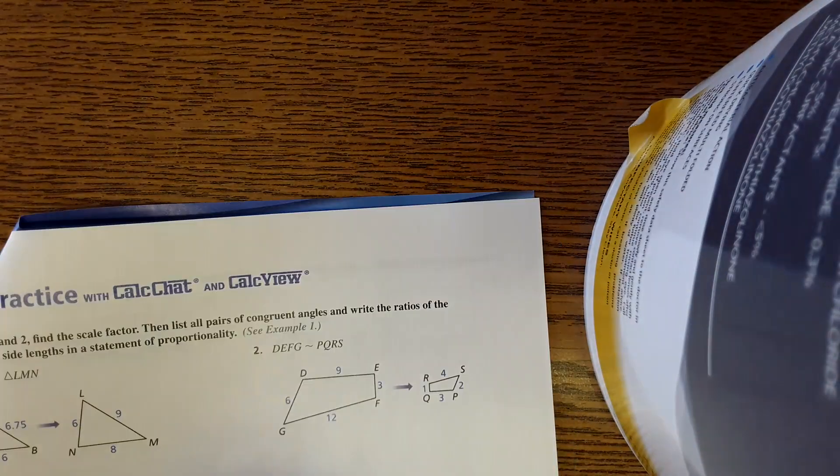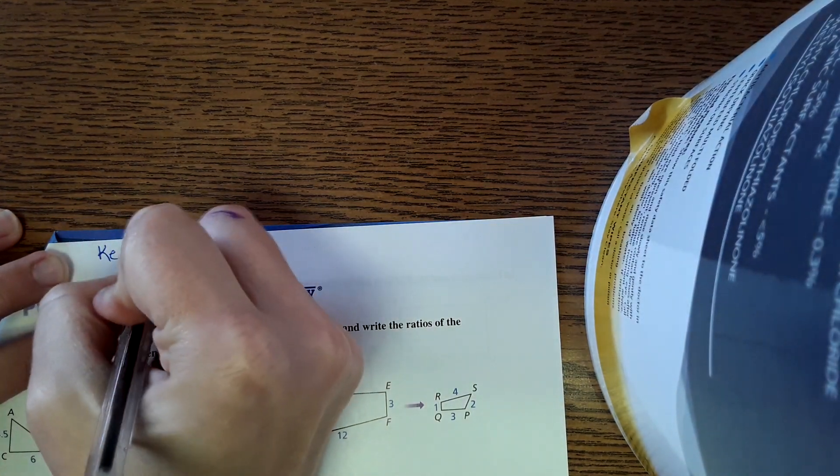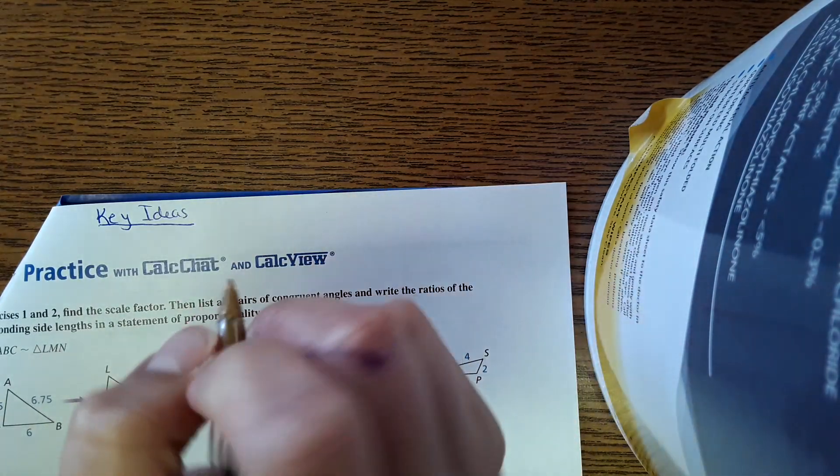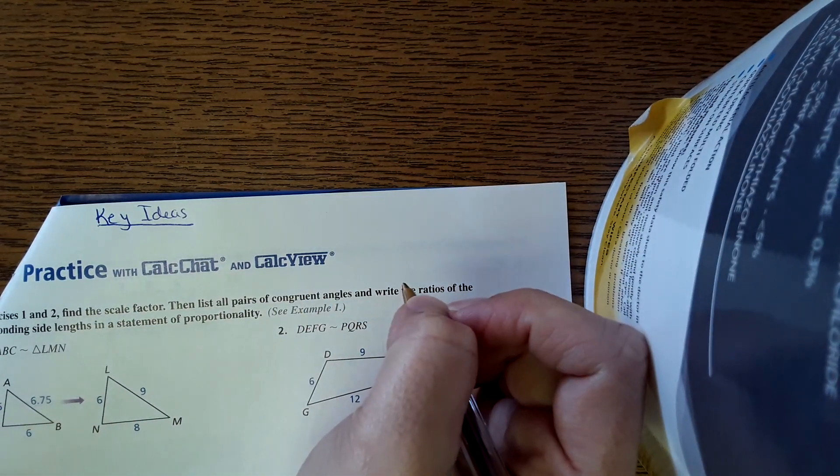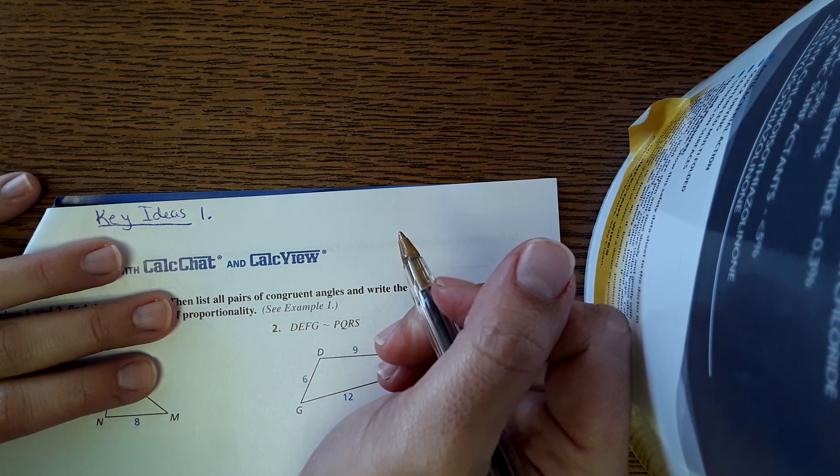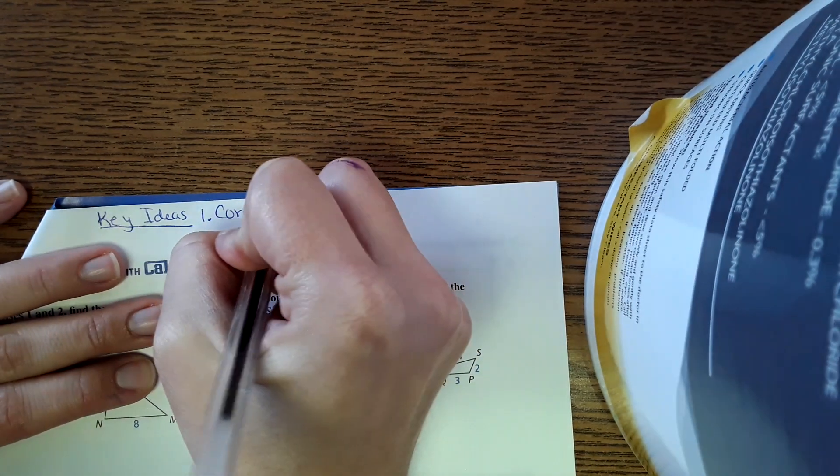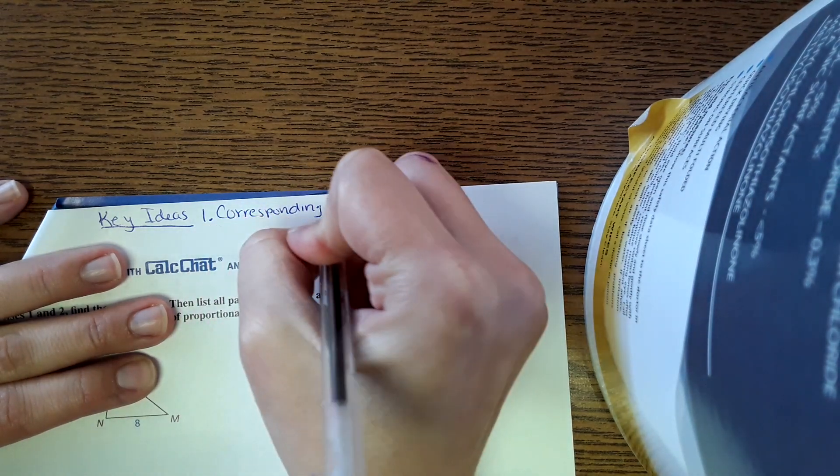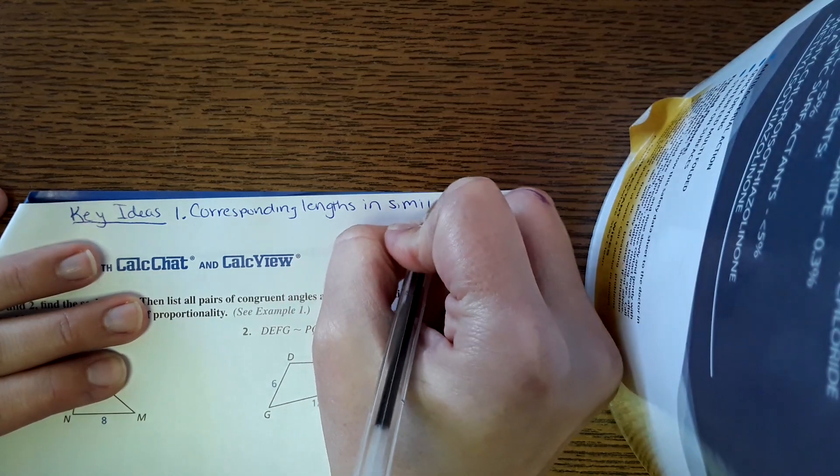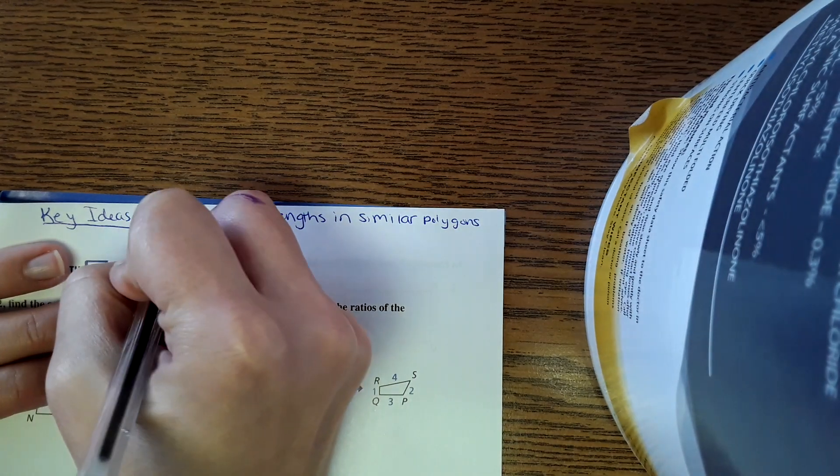At the top, just write 'key ideas' like this. These are like the theorems or concepts that we need throughout the lesson. The first one is corresponding lengths in similar polygons are proportional.